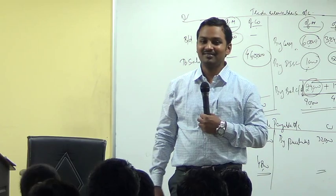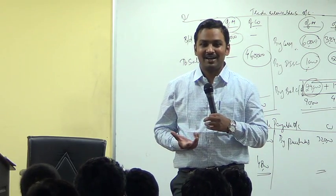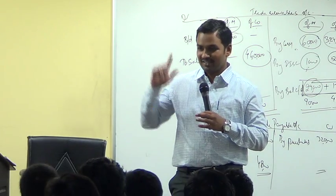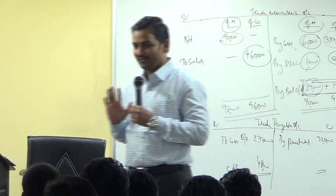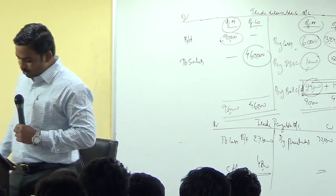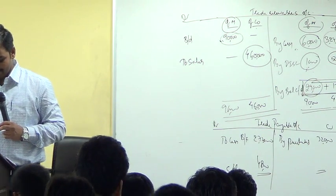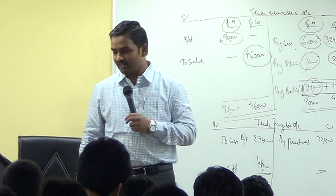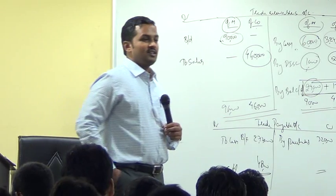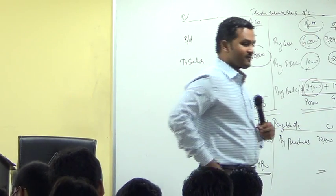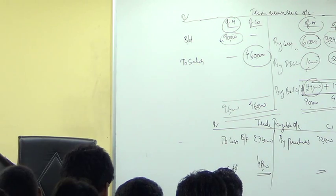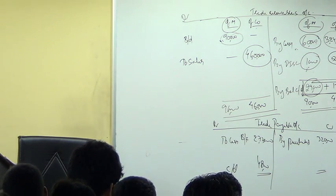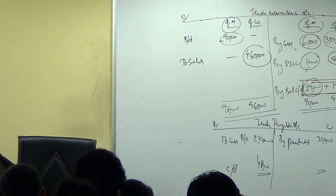Last is profit and loss account. Why last P&L account? Because the P&L account balance can be freely declared as dividend without any restrictions, but for reserves there are some rules, so you have to be careful. Let us do problem number 1. See the scheme of entries also — I will give you 2 minutes. Go to the scheme of entries given on page number 4.4: scheme of entries to be passed when you issue fully paid up bonus shares, and when you convert partly paid up shares into fully paid up shares.